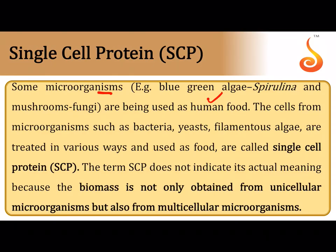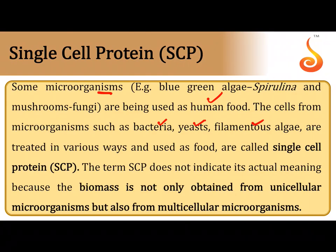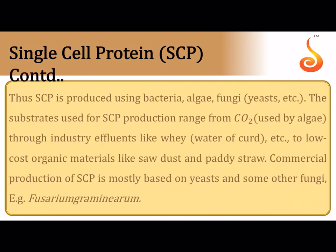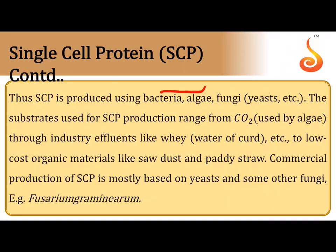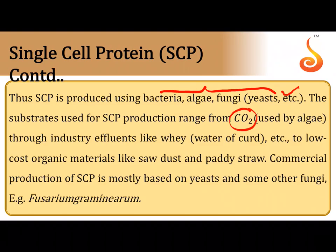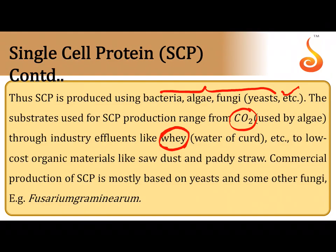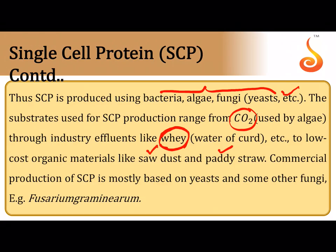Single cell protein can be produced from microorganisms like bacteria, algae, and fungi, particularly yeast, using various raw materials. Algae can use CO₂; industrial effluents like whey (the protein-rich liquid remaining after milk curdling) can feed microorganisms; low-cost organic materials like sawdust and paddy straw can also be used.